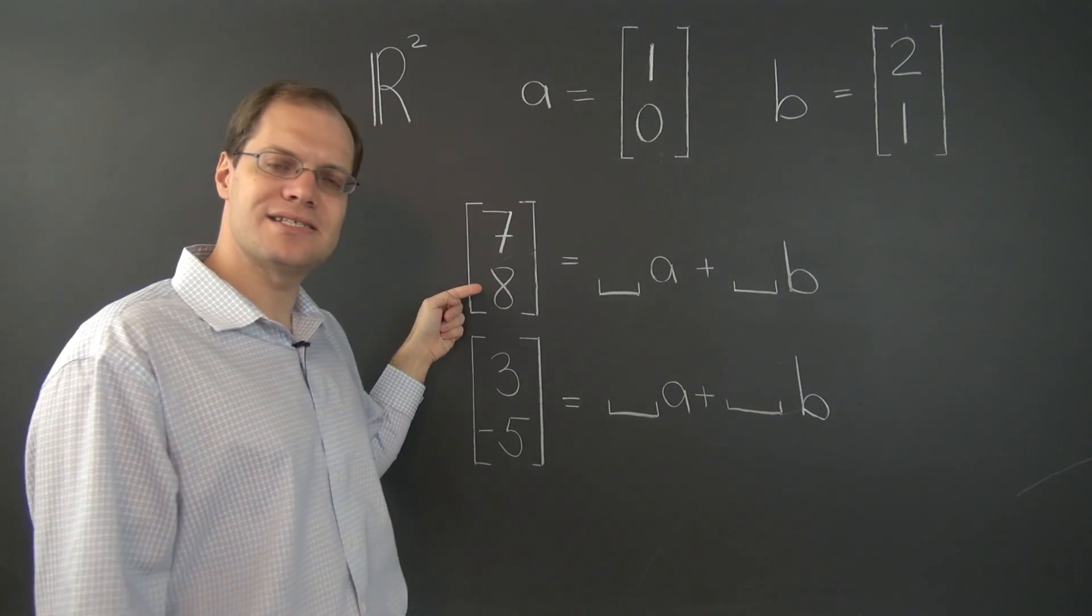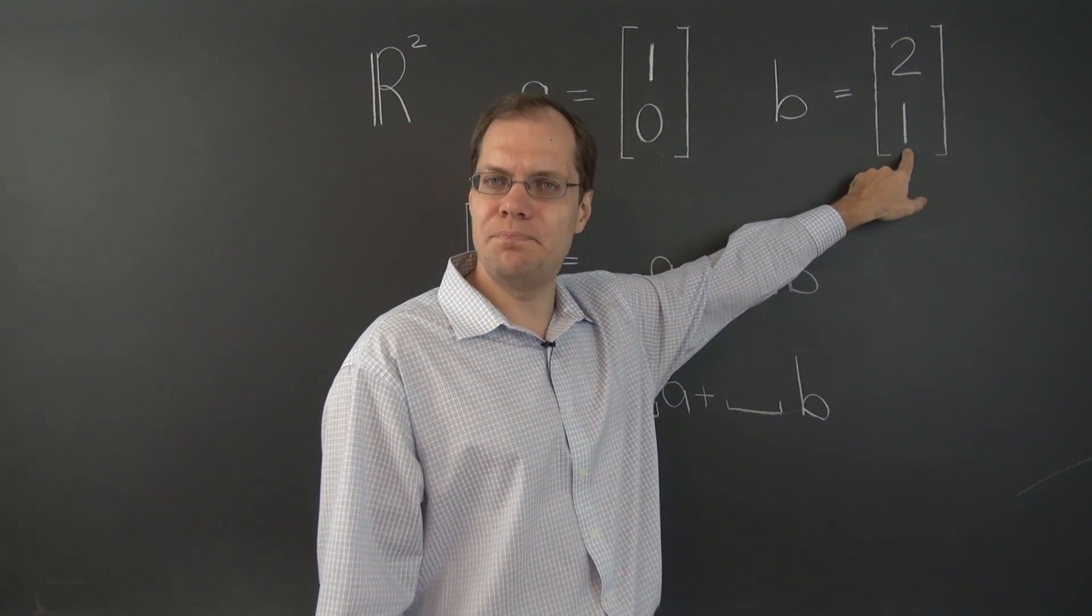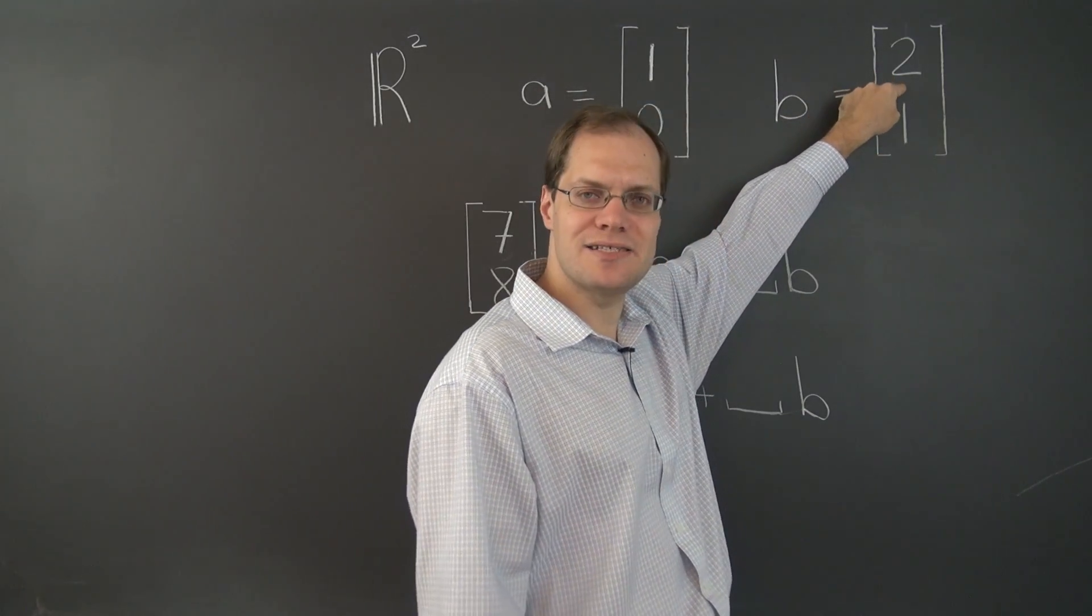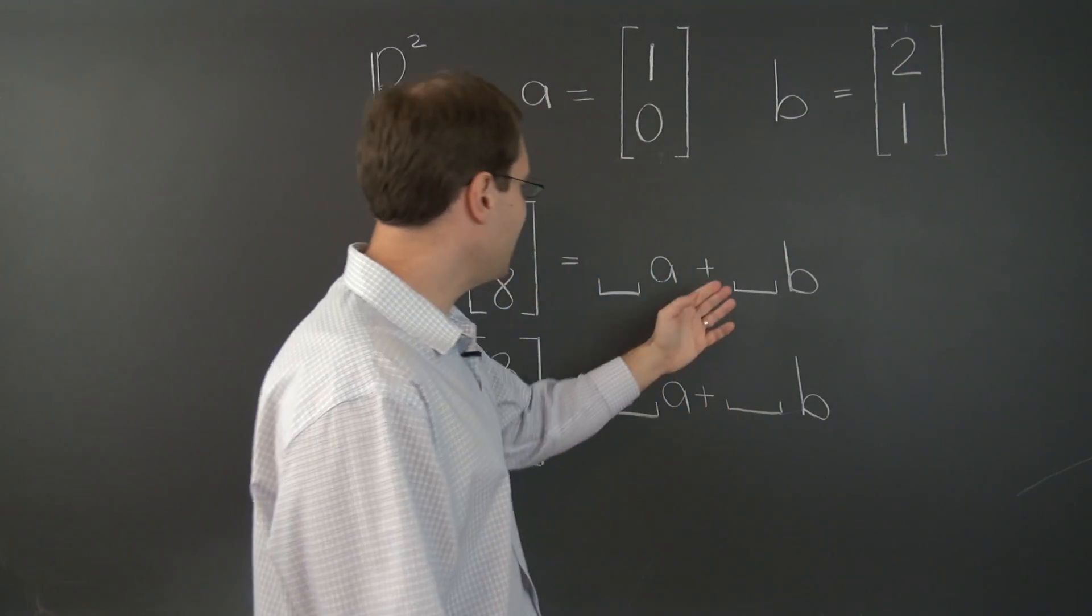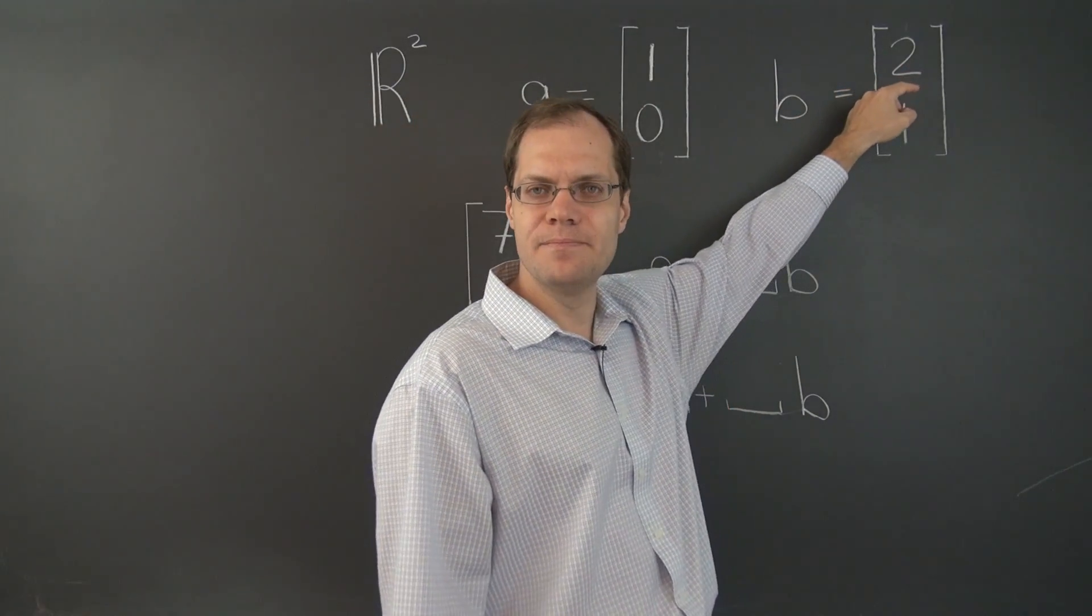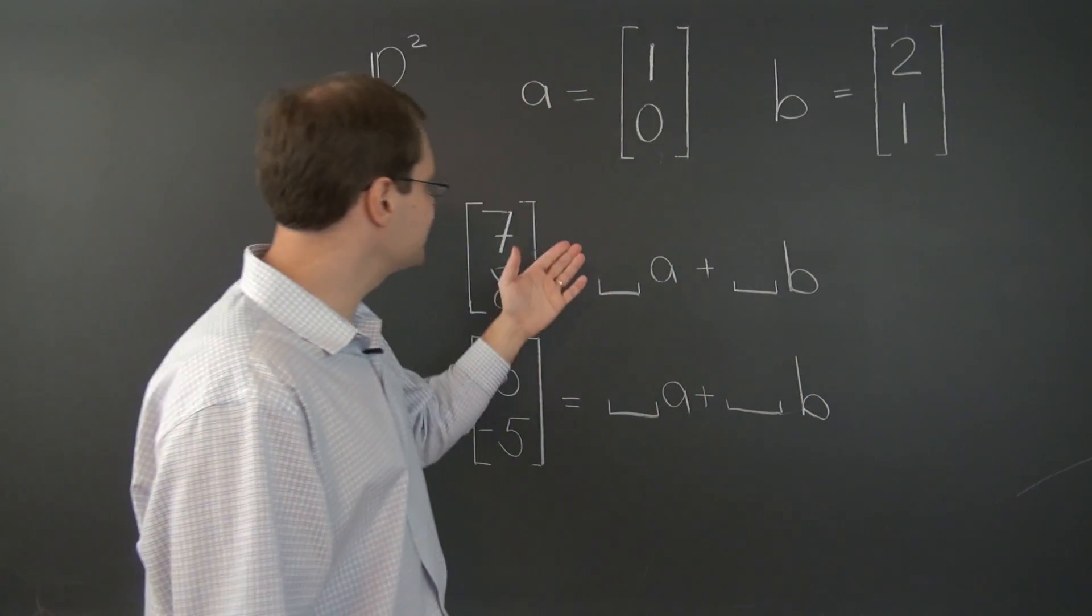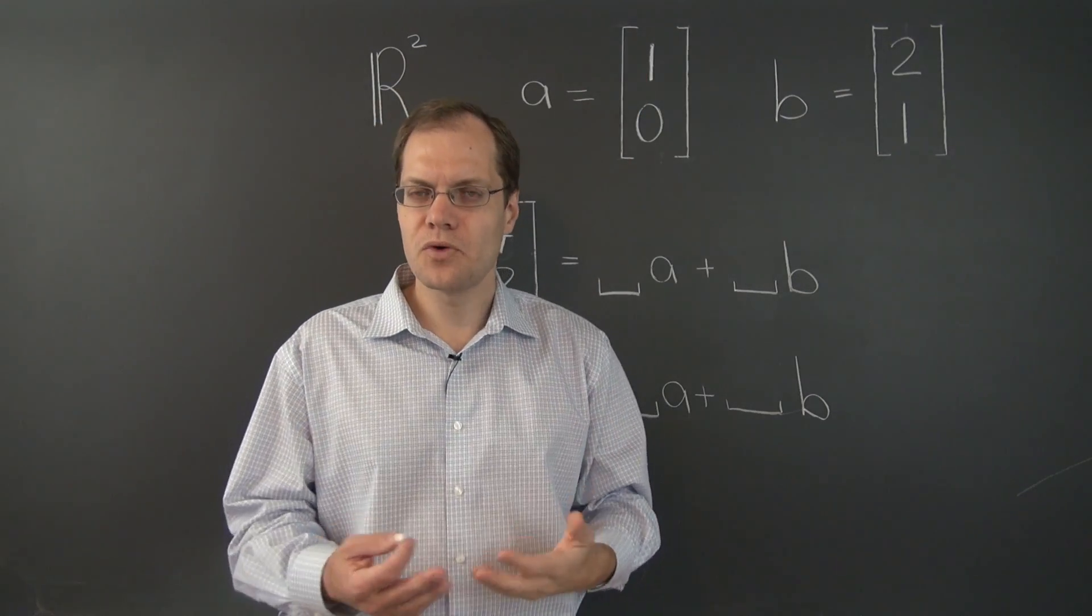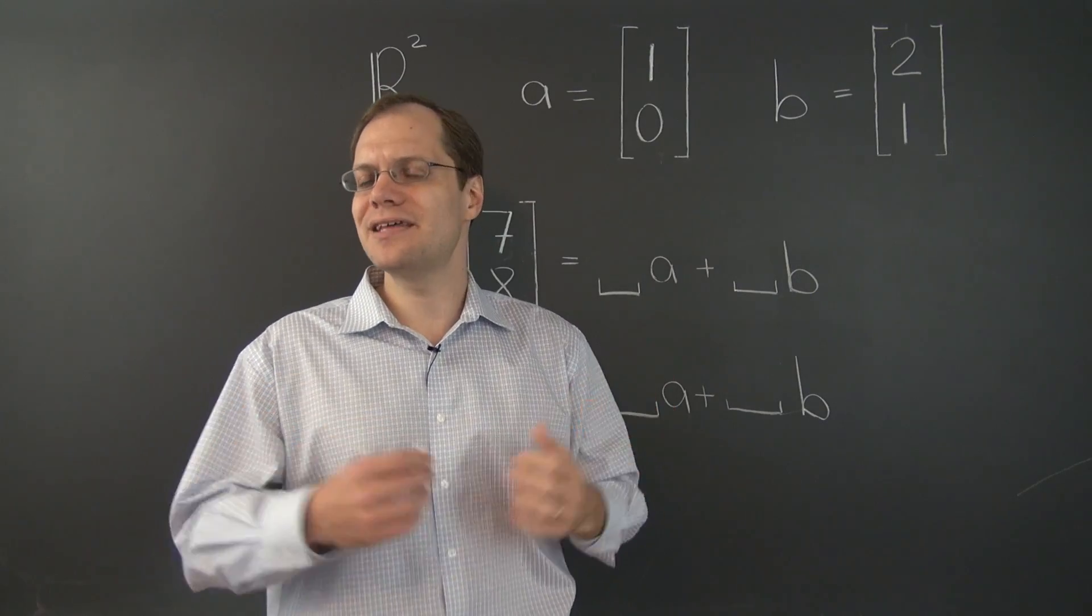Then you will move on to matching the second entry, and you will look at B and say I need 8 of B. But because the first entry in B is not 0 but 2, that will also contribute 8 times 2, 16 to the first entry. It will add 16 to the 7 that you already have from A. So it will undo what you accomplished in the first step and mess everything up completely.